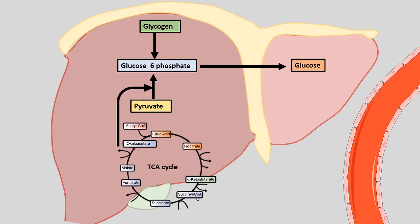TCA cycle intermediates and pyruvate can also feed into the gluconeogenic pathway to form glucose. So initially, just after starving, the body would try to fight back and generate glucose by channeling TCA cycle intermediates to the gluconeogenic pathway and breaking down glycogen. All of this ensures that glucose is secreted from the liver into the bloodstream and can reach the brain, because brain needs glucose more than anything else and in the starved state, our body cannot stop functioning.